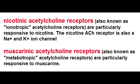Muscarinic acetylcholine receptors are G-protein coupled receptors that act through second messengers. There are five different subtypes of the muscarinic receptors: M1, M2, M3, M4, and M5.